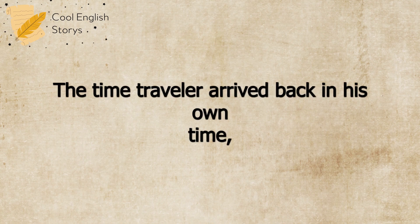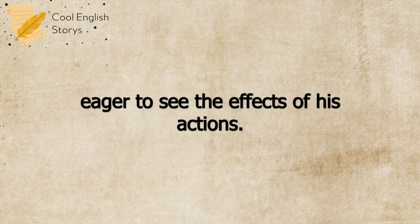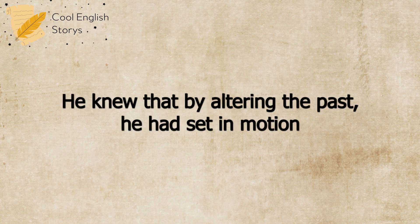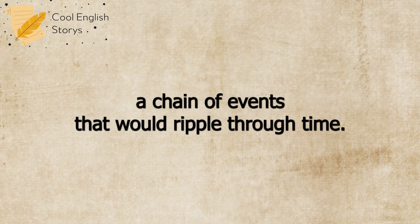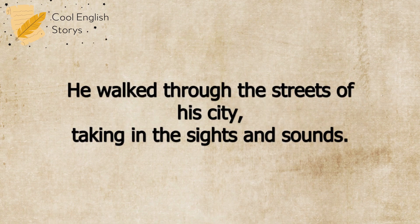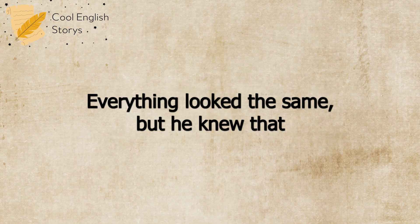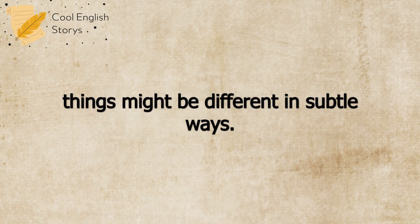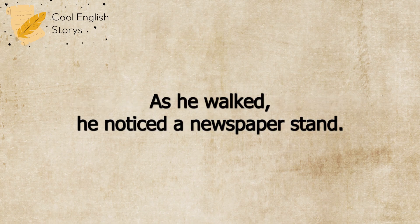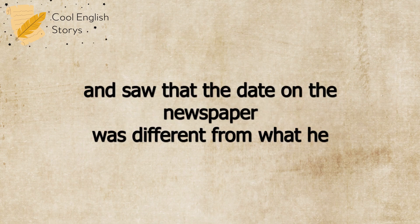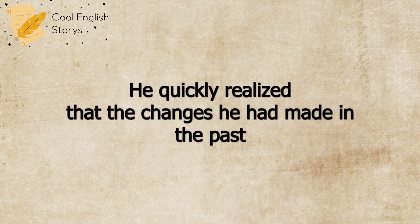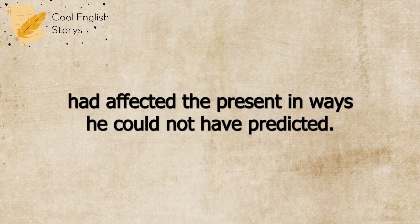The Time Traveler arrived back in his own time, eager to see the effects of his actions. He knew that by altering the past, he had set in motion a chain of events that would ripple through time. He walked through the streets of his city, taking in the sights and sounds. Everything looked the same, but he knew that things might be different in subtle ways. He approached a newspaper stand and saw that the date on the newspaper was different from what he expected. He quickly realized that the changes he had made in the past had affected the present in ways he could not have predicted.